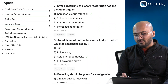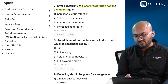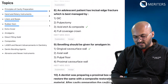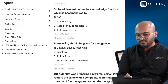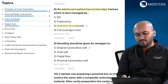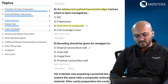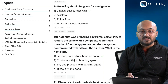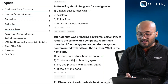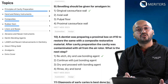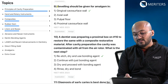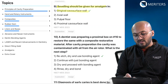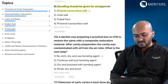Gingival bevel in class 2 amalgam restoration — principles of cavity preparation — there will be a lot of questions on bevel and they keep appearing in almost all exams, so be well-versed with regards to tooth preparation in conservative dentistry; it's super important. Over-contouring of class 5 restoration has the disadvantage of increased plaque retention. An adolescent patient with incisal edge fracture should be repaired with composite.